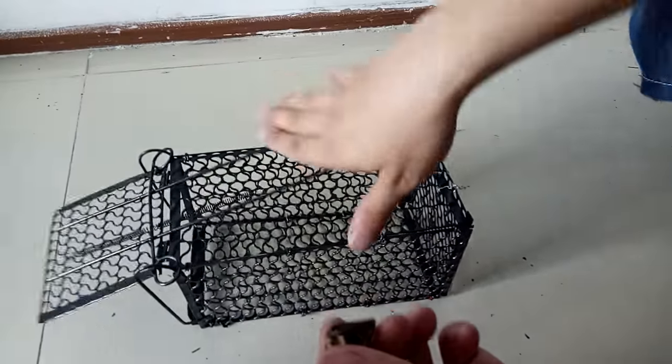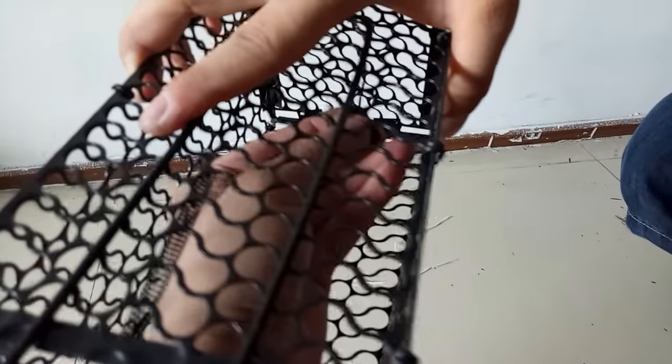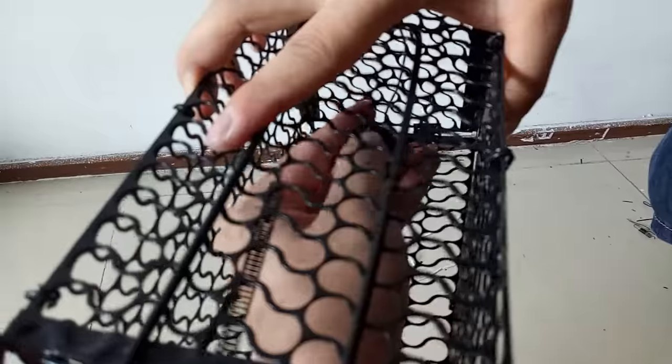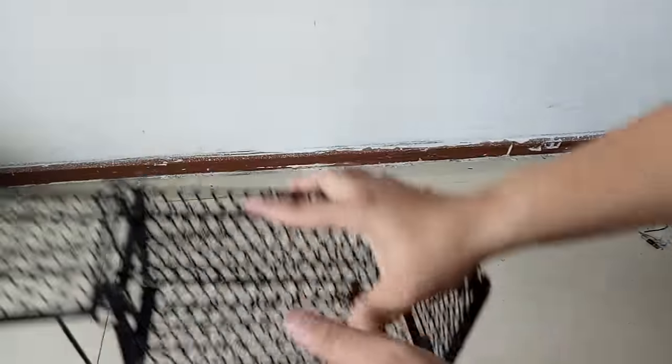Step 5: Open the front door of the cage. Install the bait. Adjust the trap switch to facilitate the closing of the cage door.